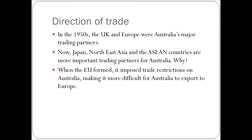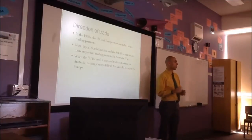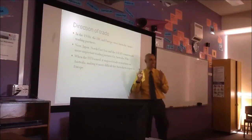In the 1950s, the UK and Europe — predominantly the UK — were Australia's major trading partners, as colonial masters. Now it's Japan, Northeast Asia, and the ASEAN countries — Indonesia, Malaysia, Thailand, Vietnam, Singapore. When the European Union formed, it imposed trade restrictions on Australia, making it more difficult for Australia to export to Europe. The UK was forced to stop trading with its former colonies and started focusing on Europe. That's the point where Australia stopped focusing on the UK and Europe and started focusing on Asia, and that has only intensified ever since.